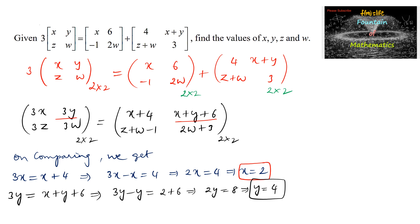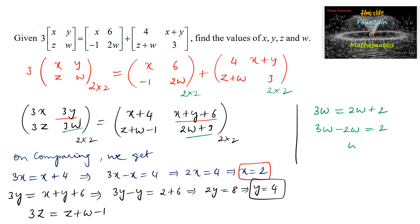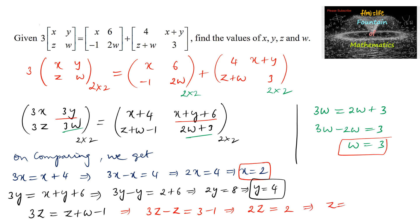For w: 3w = 2w+3, so 3w - 2w = 3, giving w = 3. Now substituting w = 3 into the equation for z: 3z = z+w-1 = z+3-1, so 2z = 2, giving z = 1.